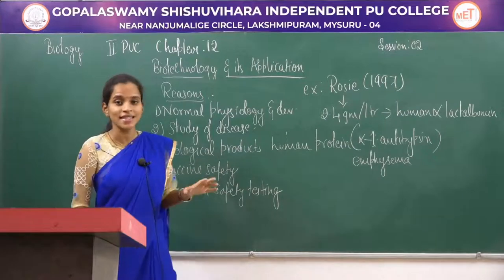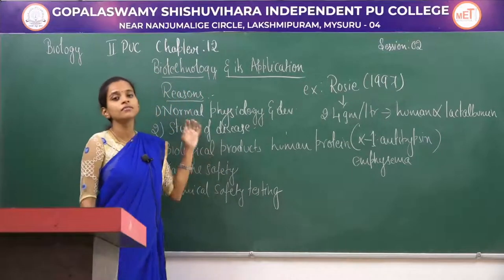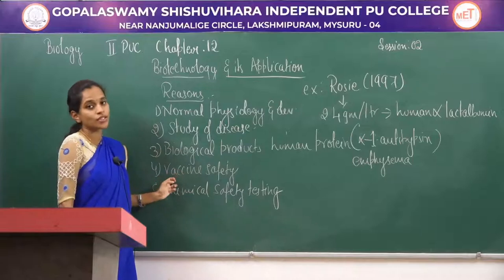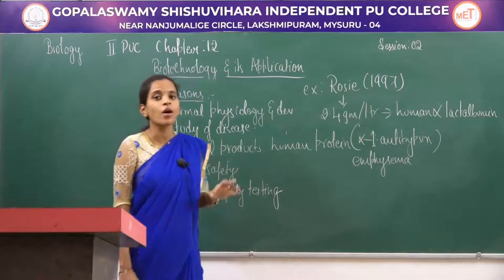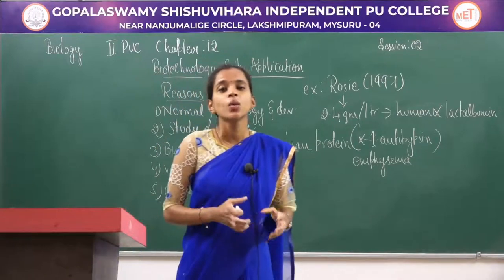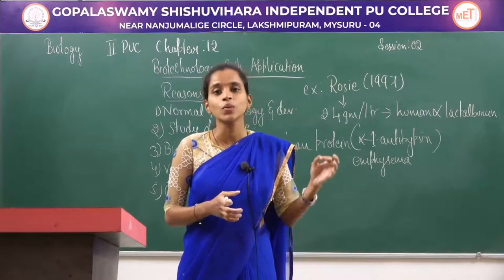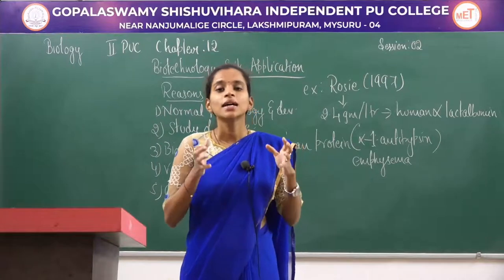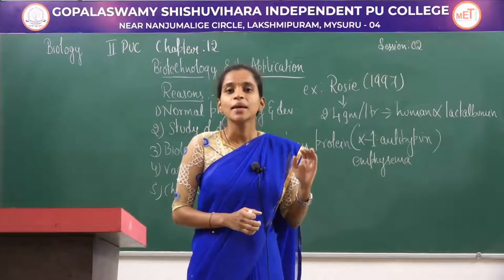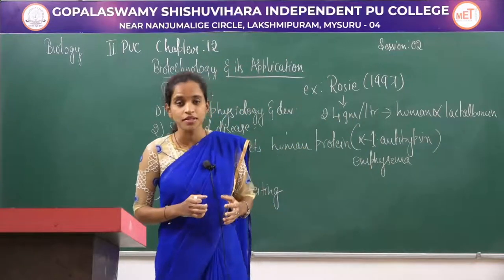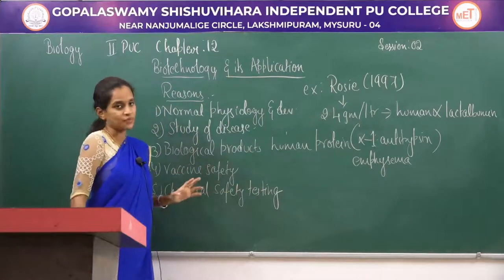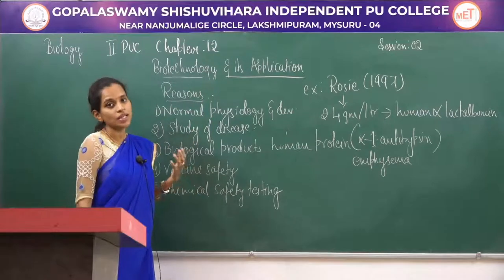The fourth reason is vaccine safety. Before any medicine is introduced to the human population, it is initially tested on animals. Vaccines are tested on transgenic animals, especially mice. The fifth reason is chemical safety testing. A transgenic animal carries introduced genes and leads a normal life, after which it becomes very sensitive to toxic substances. The effects of these substances can then be easily studied.